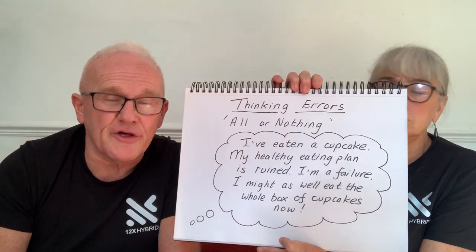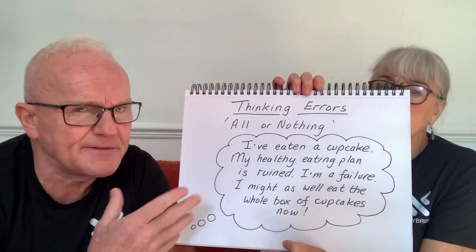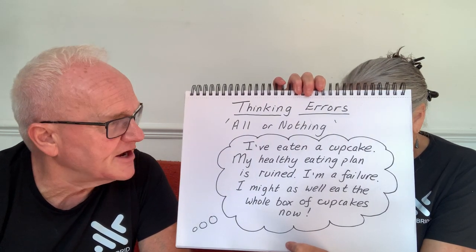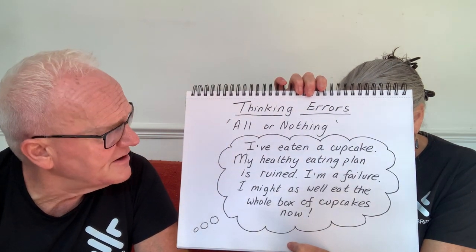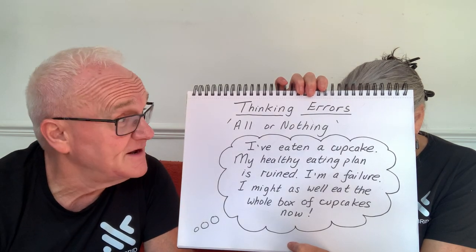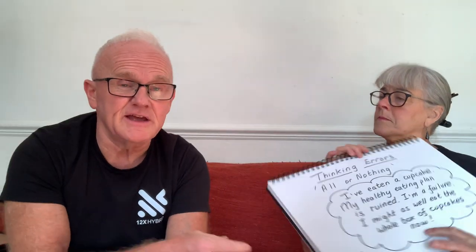The second one is all-or-nothing thinking. An example might be: 'Oh, I've eaten a cupcake — my healthy eating plan is ruined, I'm a failure, I might as well eat the whole box now.' All-or-nothing thinking means feeling you must stick rigidly to every detail of your plan, and if you break it even slightly you might as well give up. In reality, enjoying a little treat now and again is perfectly fine. If a friend offers you a biscuit at dinner, having a couple won't ruin everything.